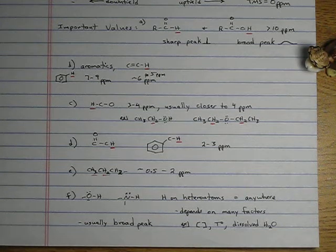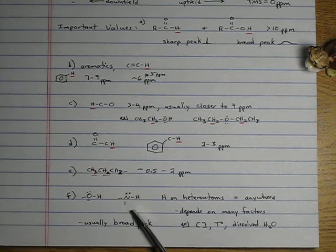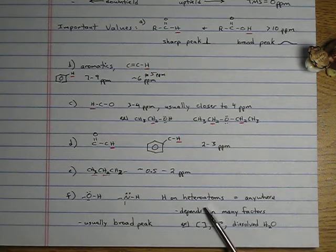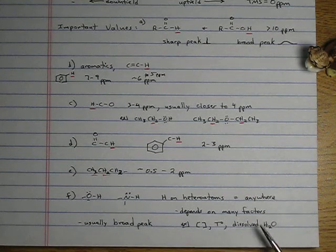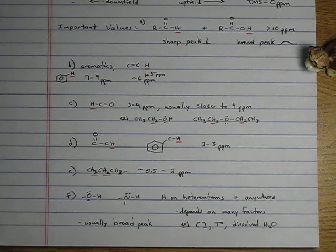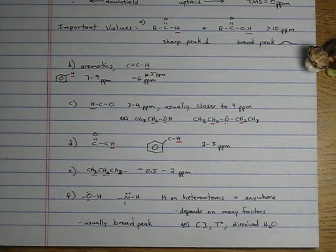And the last thing to note about these chemical shifts are hydrogens on oxygen, hydrogens on nitrogen, even sulfurs, hydrogens on heteroatoms, atoms other than carbon. Their chemical shift can kind of be anywhere. I've seen books that say it's between 0.5 ppm and 5 ppm. And then the next spectra you look at has it at 8 ppm. So I'm just going with the hydrogens on heteroatoms can be anywhere because it depends on many factors.